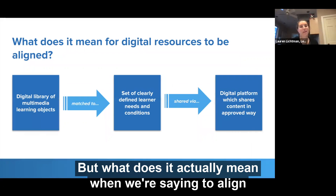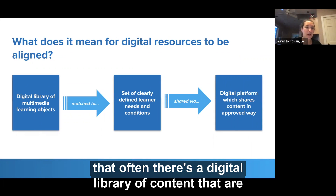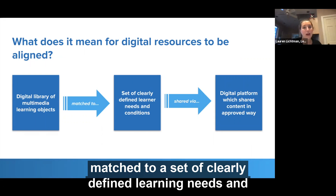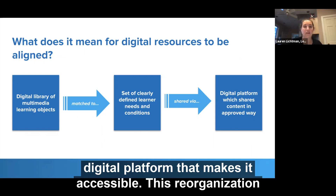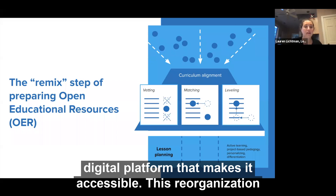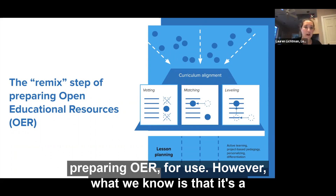But what does it actually mean when we say aligning digital resources to a curriculum? It means that often there's a digital library of content matched to a set of clearly defined learning needs and conditions, typically shared on some type of digital platform that makes it accessible. This reorganization of content is one of the five R's — the remixing step of preparing OER for use.